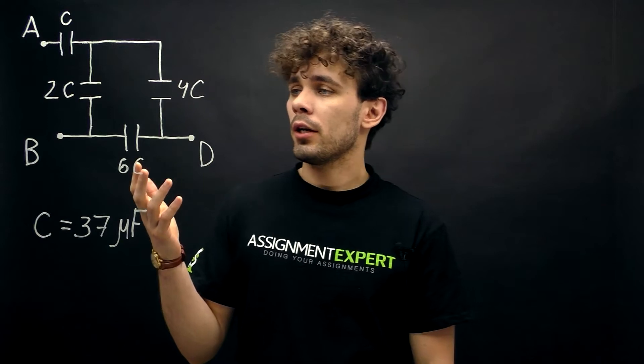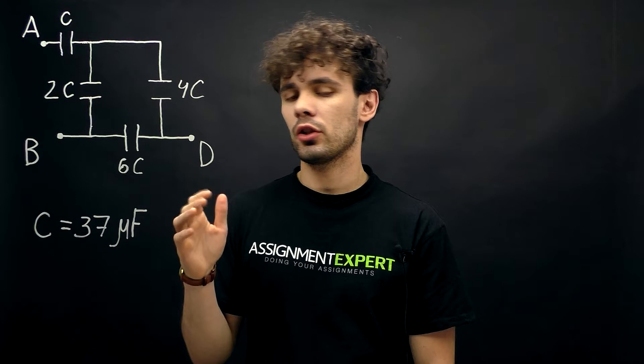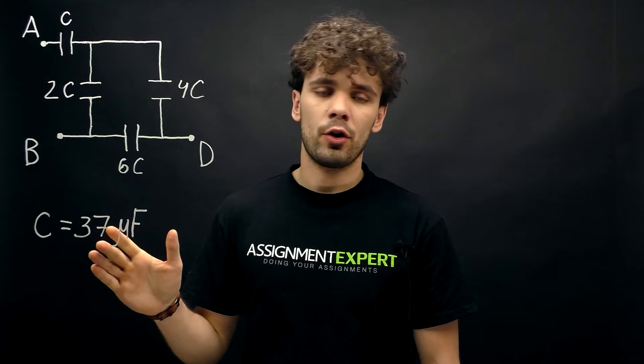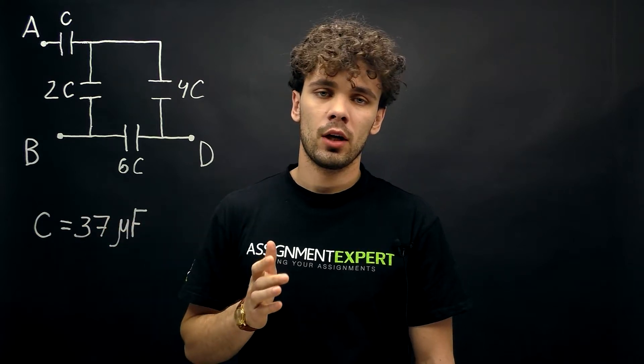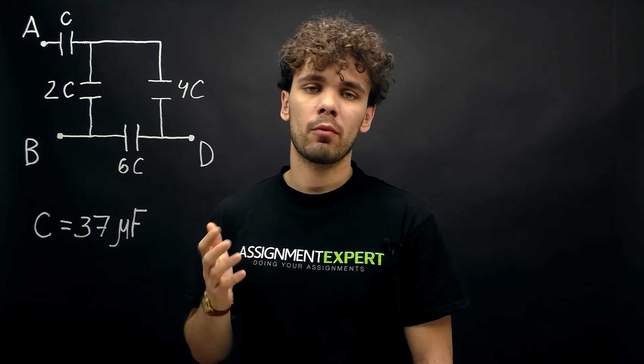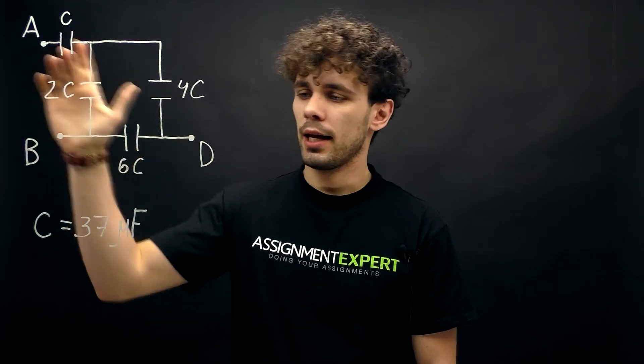On the figure we have four capacitors and their capacitances are given as certain quantities of C: C, 2C, 4C and 6C. C equals 37 microfarad. Our task here is to find the equivalent capacitances between points A and B and A and D.